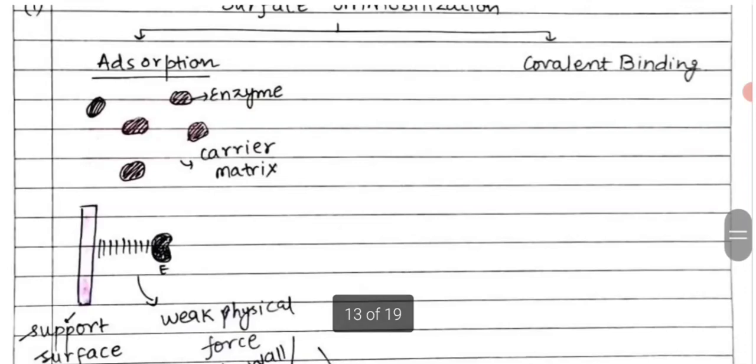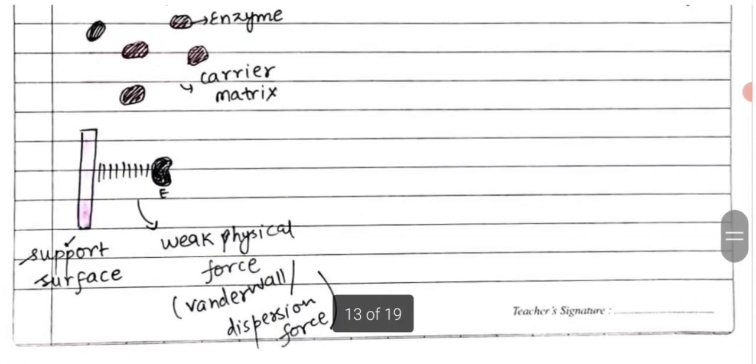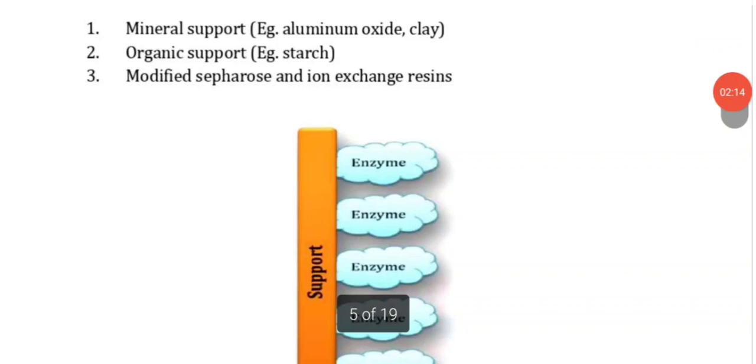So in adsorption, the support matrix holds the enzymes. The binding involves weak physical forces like Van der Waals forces and dispersion forces. The support may be of different types like mineral support, organic support, modified Sepharose and ion exchange resin.